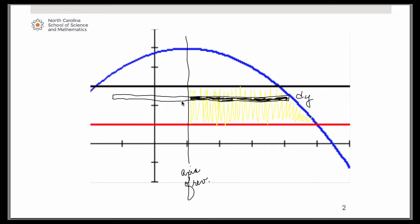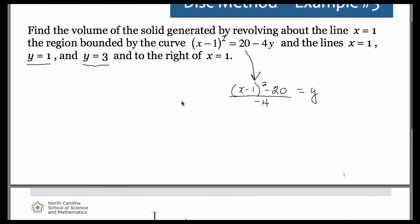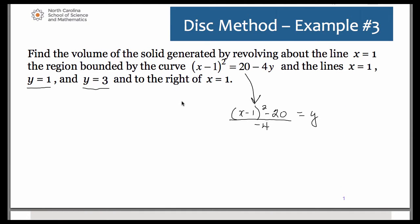So if you think of the formula that we need to use, let's go ahead and write it out. According to the disk method, the volume, of course, is going to be an integral from a to b. Now remember our limits of integration, because this is a dy problem, will have to be y values of pi and the radius squared.